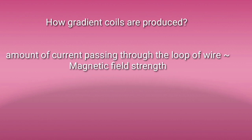Now you may wonder how gradient coils are produced. As studied in the previous video about the solenoid, these coils work the same way. We take a loop of wire, pass a current through it, and a magnetic field is produced — directly proportional to the current. The magnetic field strength depends on how many windings you have done and how closely you wind the wire.